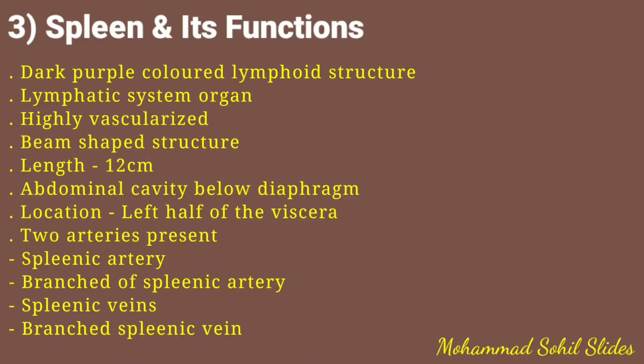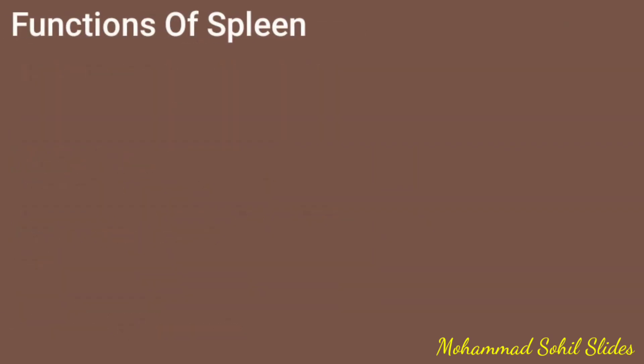White pulp is found in lymphatic tissue surrounding the arteries, while red pulp surrounds the veins. Both white pulp and red pulp consist of a fibrous network filled with macrophages and red blood cells, with an enlarged capacity that connects to the veins.